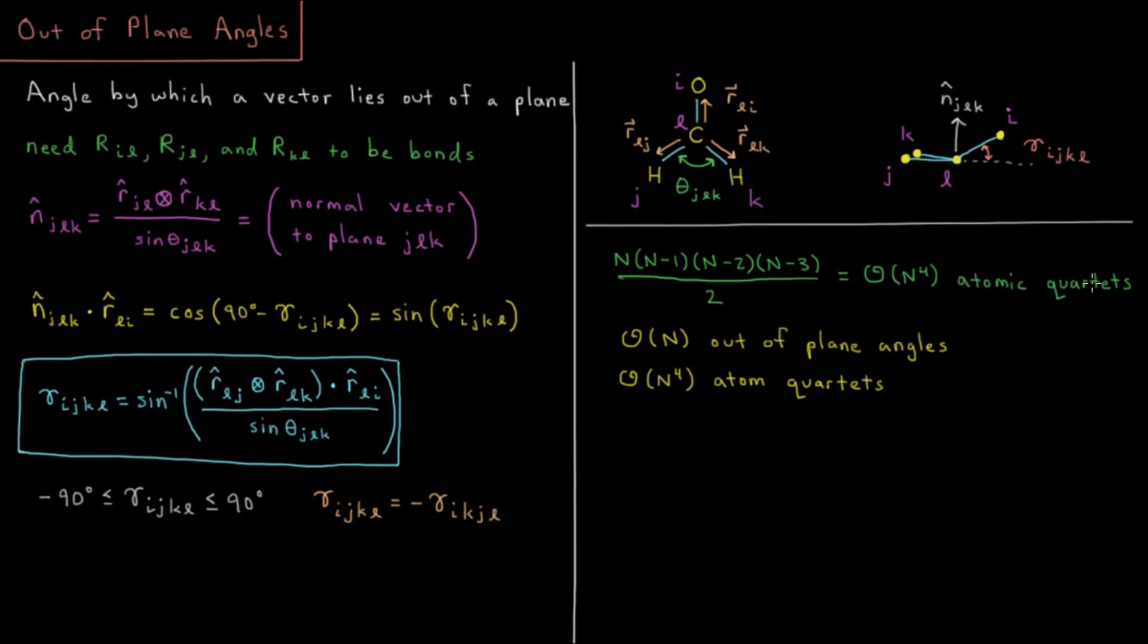As before with torsions, there are going to be on the order of n to the fourth atomic quartets to compare, n times n minus 1 times n minus 2 times n minus 3. This symmetry saves us from some redundancy, so a factor of 2 there. There are at most a linear number of out-of-plane angles, and there's a quartic number of atom quartets. In the program I'm going to show you, I use the bond graph to do comparisons, which don't make me do a quartic amount of work.